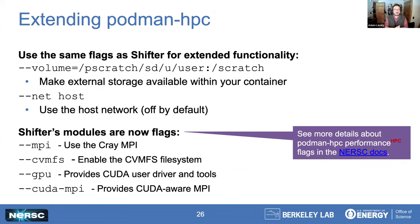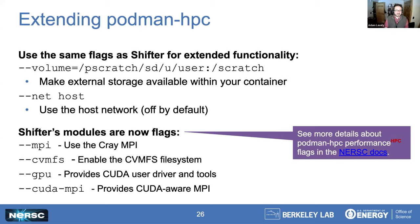We can submit this interactively on batch nodes in very much the same way, but note that we're not going to specify the image name in the salloc command — you'll do that in the podman-hpc run command. You'll add flags to Podman HPC very similarly to how you add them to Shifter, but instead of using modules, you're going to just add flags. There's a lot of information about this in the NERSC docs as well as some more detailed examples.